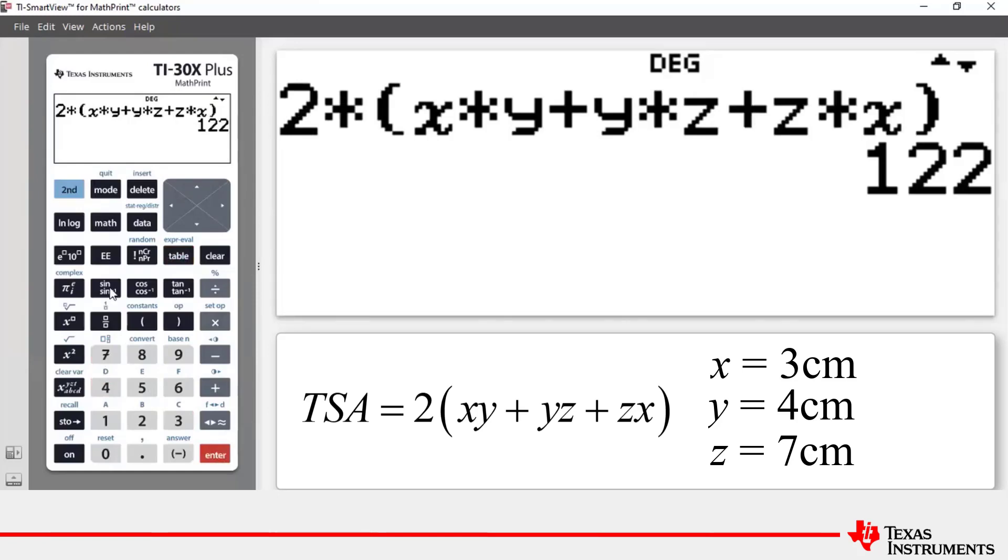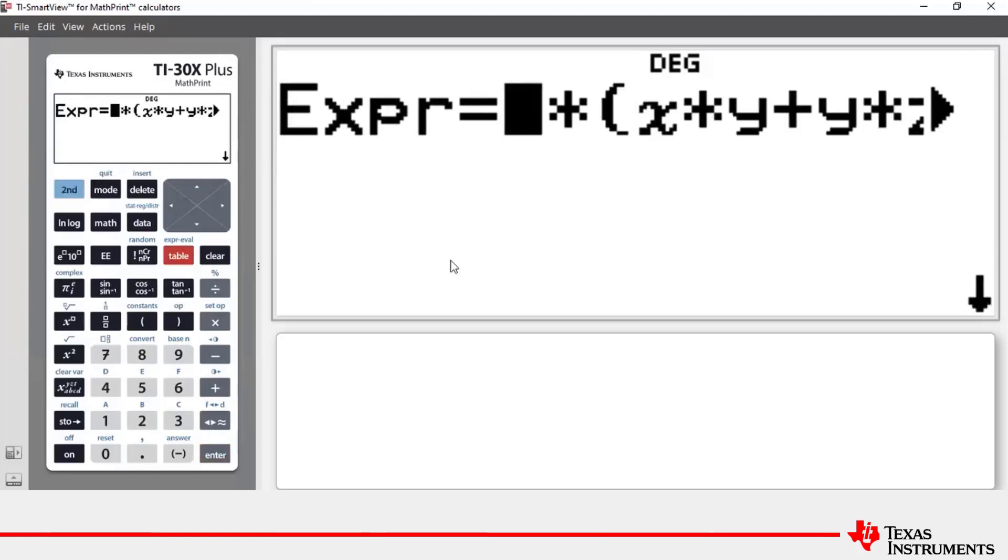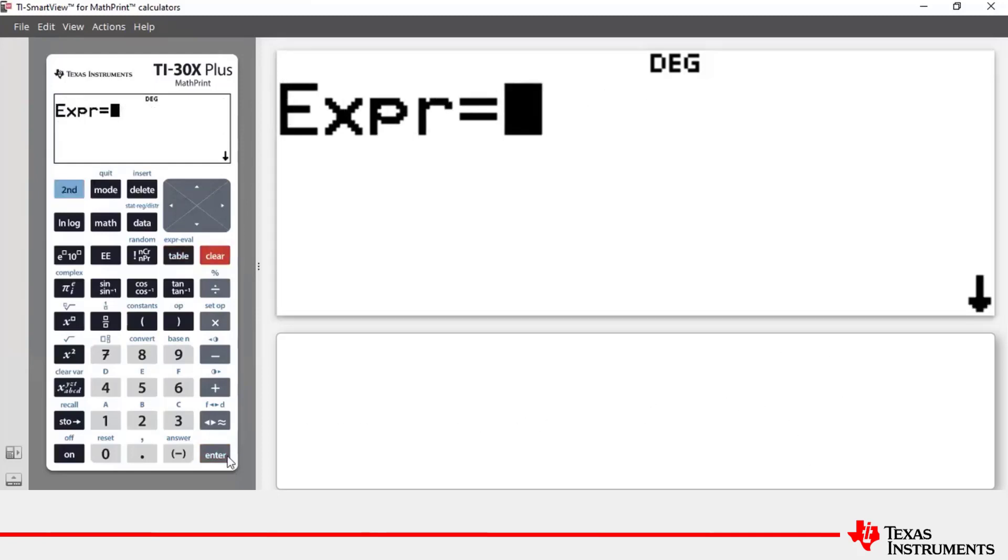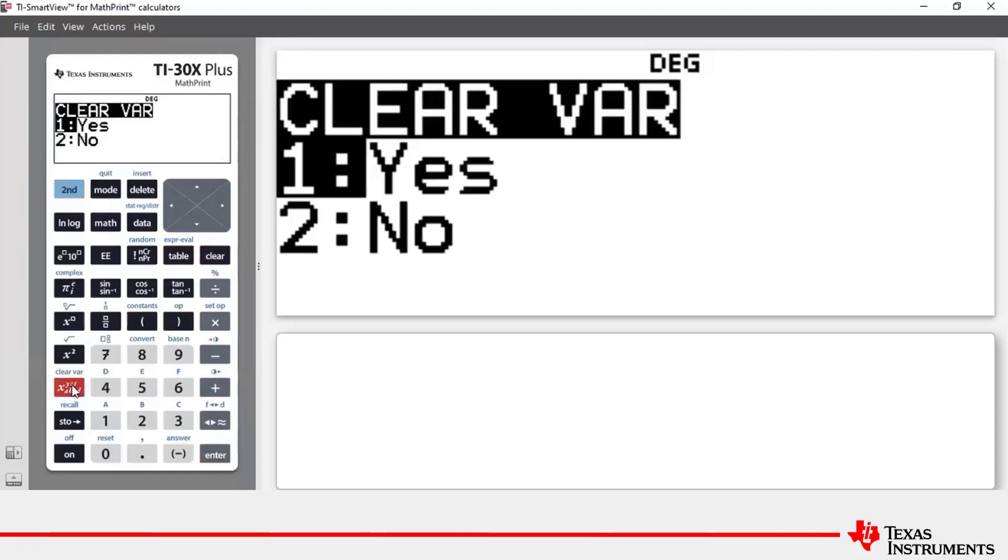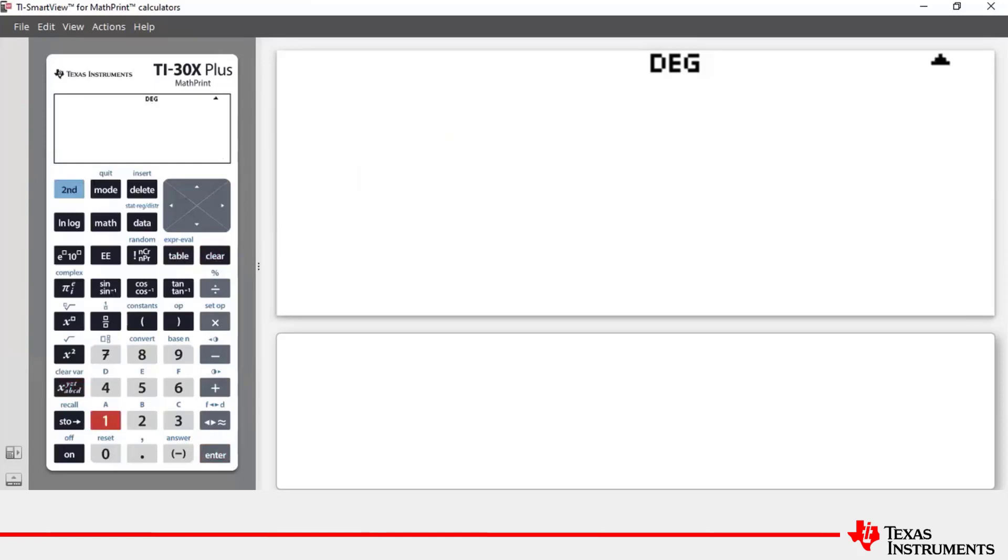To clear an expression press second table to get back to the expression evaluation feature. Press clear and enter, and also make sure that you clear your variables. Press second and then the variable key which accesses the clear variables feature and then press one or enter for yes, and that clears your values for x, y, and z.